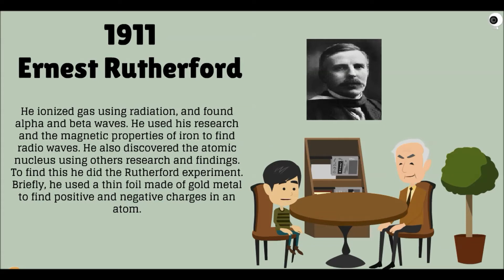Ernest Rutherford. He ionized gas using radiation, and found alpha and beta waves. He used his research in the magnetic properties of iron to find radio waves. He also discovered the atomic nucleus using others' research and findings. To find this, he did the Rutherford experiment. He used a thin foil made of gold metal to find positive and negative charges in an atom.